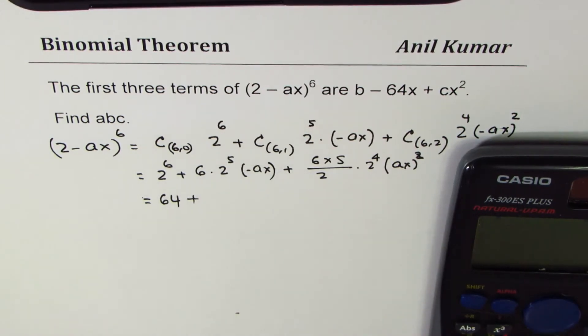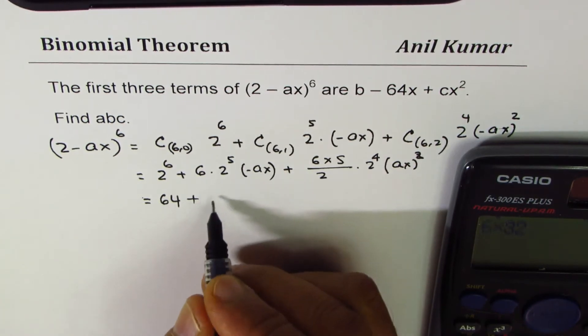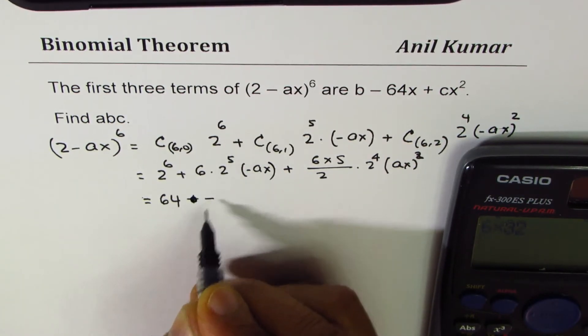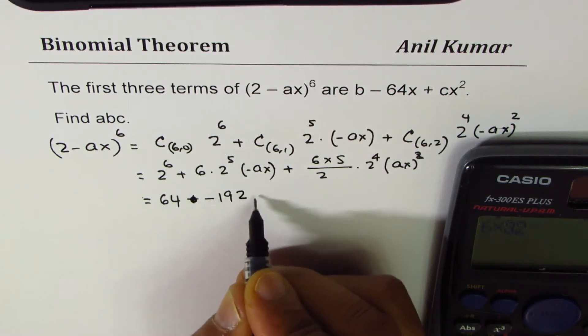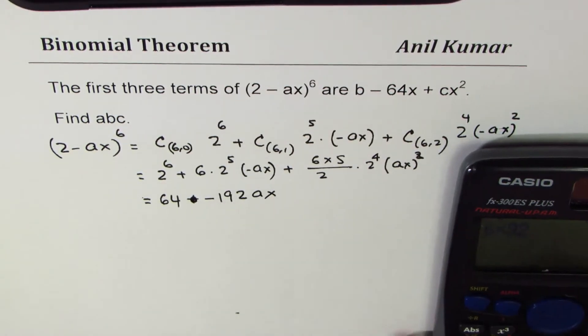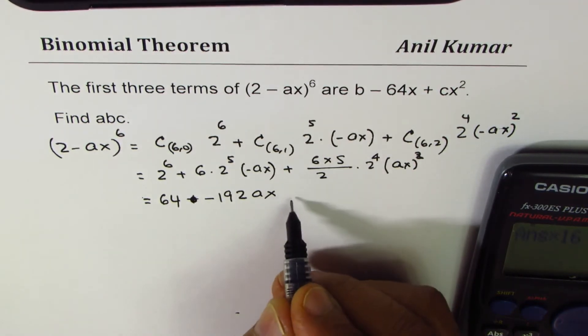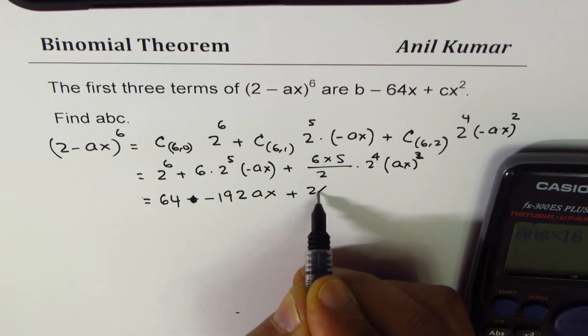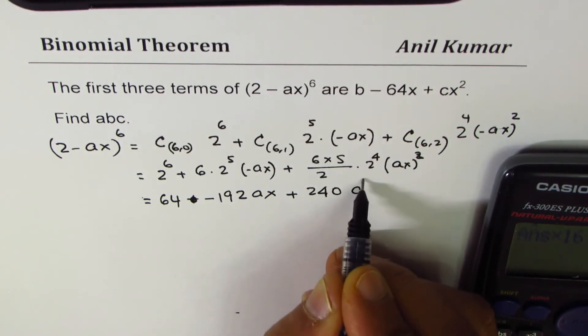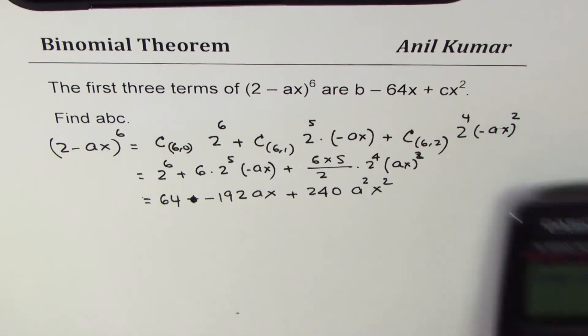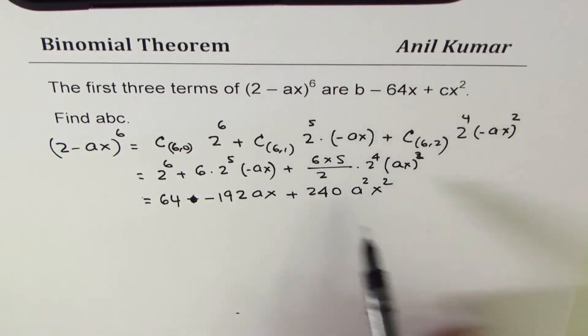2^6 is 64 plus, let me use the calculator. So it is 6 times 32, which is 192. Minus sign is there, remember that, so let me make this as -192ax. And then here we have 6 × 5 ÷ 2 × 16 = 240, so we get +240a^2x^2.